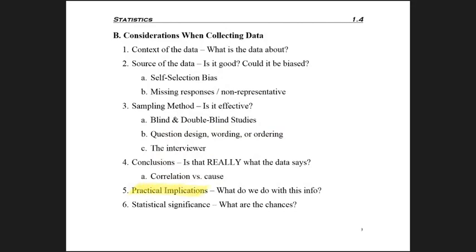Number five: what are the practical implications — what are we going to do with this information? For example, if I survey everyone in class and find that 65% drive a car to school, should I decide it's okay to be five minutes late because parking is a problem? Probably not — just because you drove doesn't mean this is your first class, and if class is at 8am, parking shouldn't be an issue anyway. Knowing 65% of people drive to school doesn't help with that, though maybe I'd use more examples involving gas mileage since it would affect more of the class.